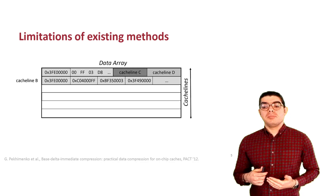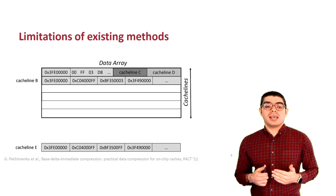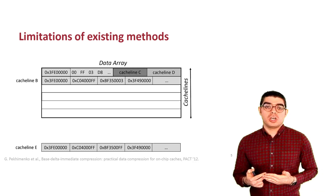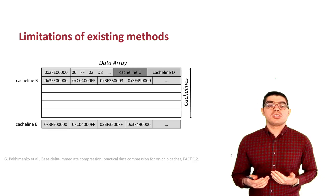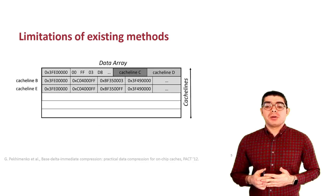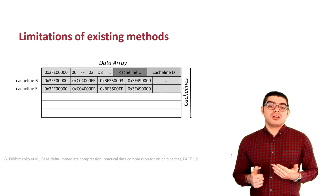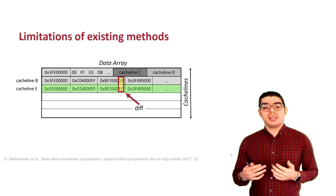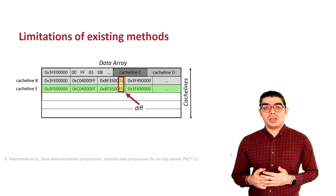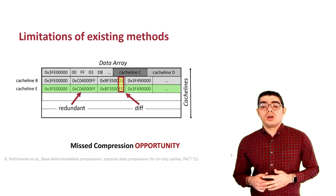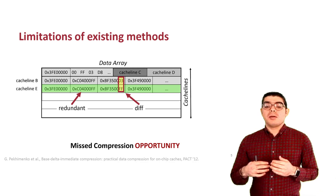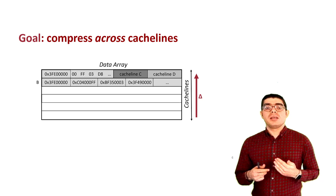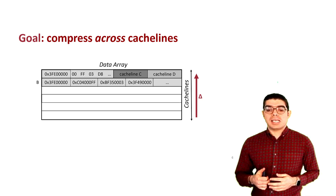Now let's imagine cache line E. Similar to cache line B, because the data values are not similar to each other, we are going to insert this cache line in uncompressed format. But if we take another look, we can notice that cache line E and B differ in only one byte, and the rest of the data highlighted in green is exactly identical. This redundancy across cache lines shows a missed compression opportunity.